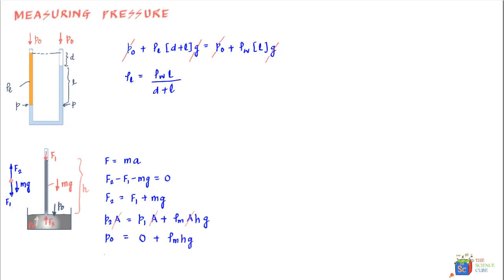So atmospheric pressure equals the density of mercury times the height of the column times gravity. The temperature assumed here is 0°C and gravity is 9.8066 m/s². If the temperature or gravity value differs, slight corrections would need to be made.